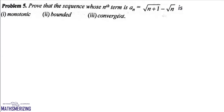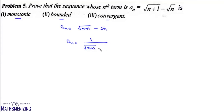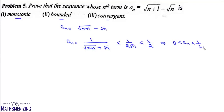The next question asks us to prove that the sequence with nth term aₙ = √(n+1) − √n is monotonic, bounded, and convergent. We rationalize to write aₙ = 1/(√(n+1) + √n). This value is less than 1/(2√n), which is less than 1/2. So aₙ lies between 0 and 1/2, meaning the sequence is bounded.